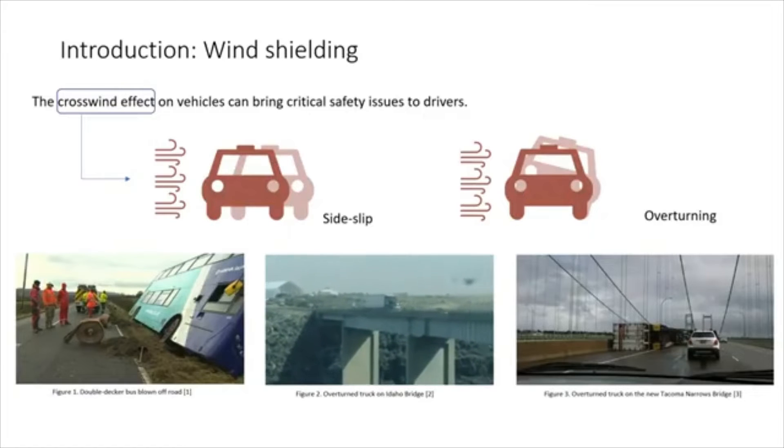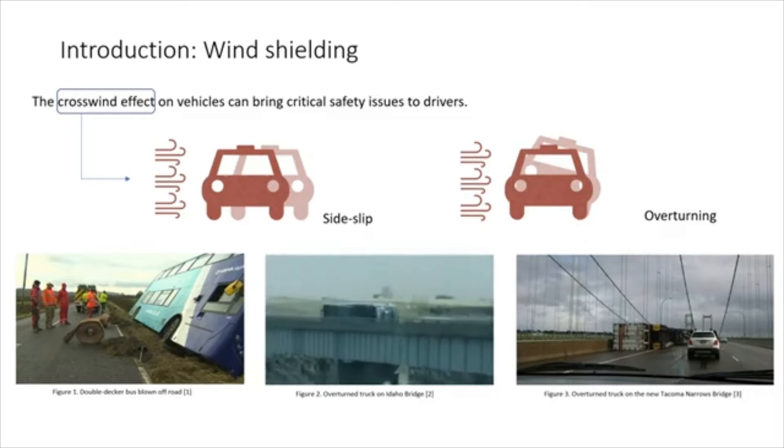The crosswind effect on vehicles can bring critical safety issues such as side slip and overturning. Here are some examples. Figure 1 shows a double decker blown off the road in the UK last year. Figure 2 shows a truck overturned due to a gust wind of 150 km/h in America. Figure 3 shows an overturned truck on the new Tacoma Narrows Bridge.